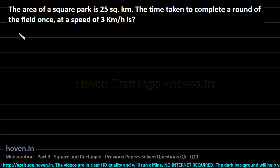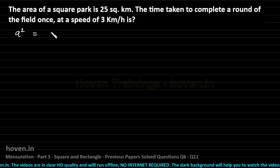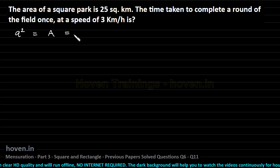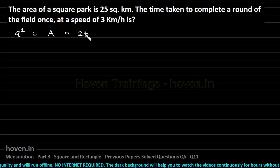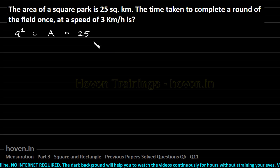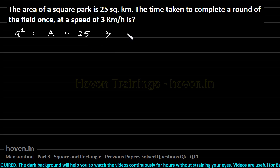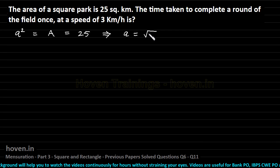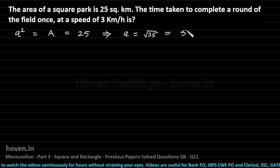We know that the square of the side is equal to the area of the field, which we can write equal to 25, which has been given to us. From here we can write, which implies the side is equal to the square root of 25, which is equal to 5 kilometers.